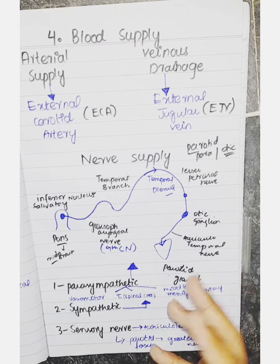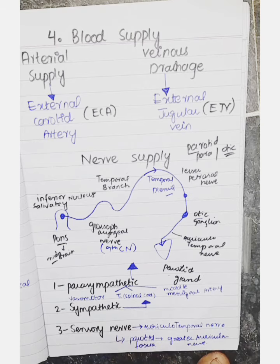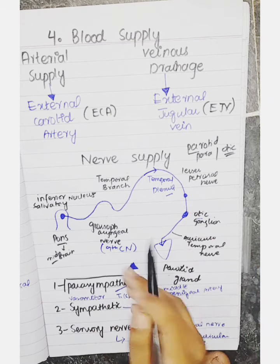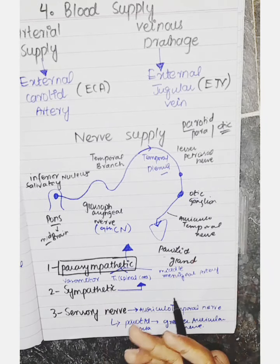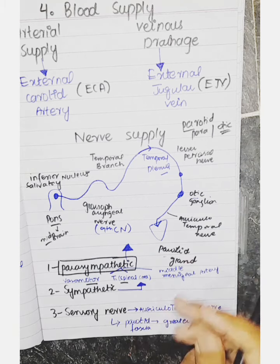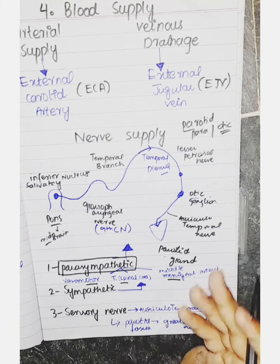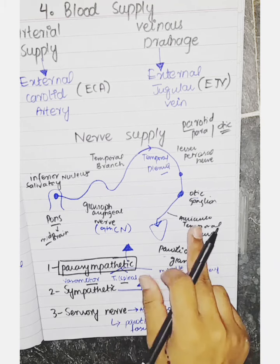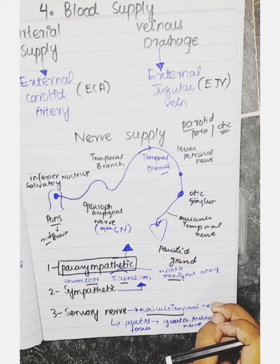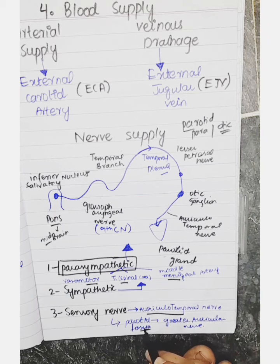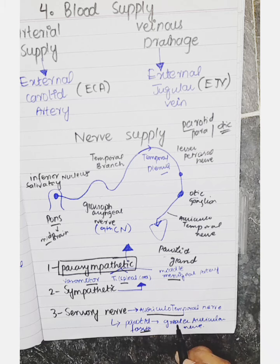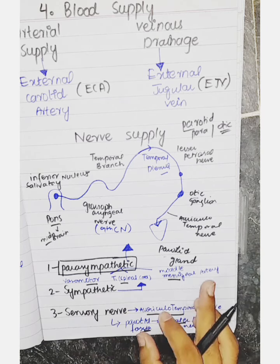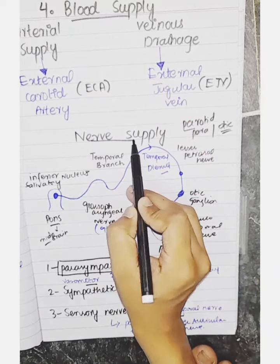The nerve supply of the parotid gland has three pathways: parasympathetic, sympathetic, and sensory. The parasympathetic pathway has just been described. For the sympathetic supply, it is a vasomotor supply arising from the spinal cord at T1 level, traveling along the middle meningeal artery. For the sensory nerve supply, it is provided by the auriculotemporal nerve and also by the great auricular nerve, which supplies the parotid fascia.